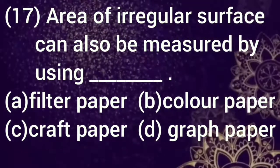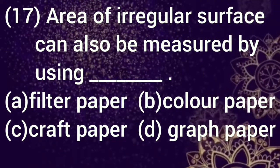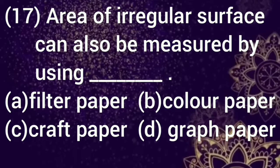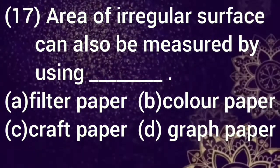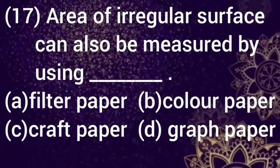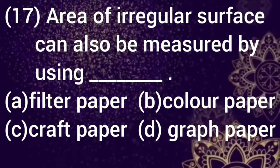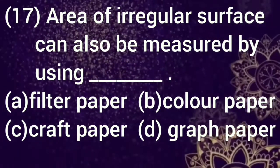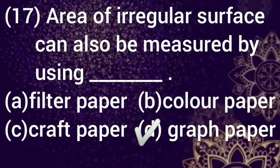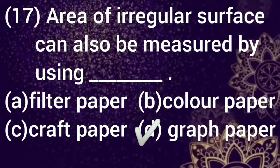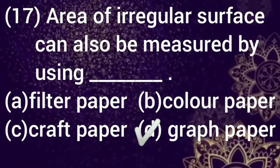Next is question number 17. Area of irregular surface can also be measured by using dash. Option a: filter paper, b: color paper, c: graph paper, d: graph paper. Select your answer. The correct option is d, graph paper.